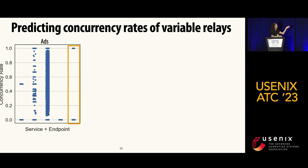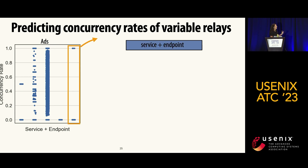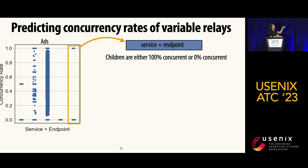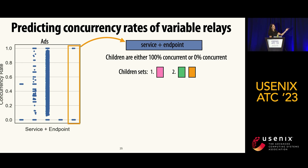Here I'm highlighting a specific service-plus-endpoint where we can see clusters of data points — children are either 0% concurrent or 100% concurrent. If we investigate this parent to see what kinds of things it's calling, we might find it calls two different children sets, one pink and another green and orange.